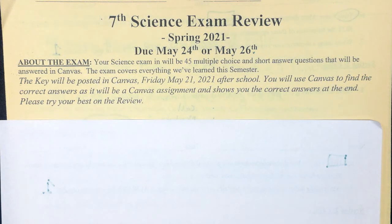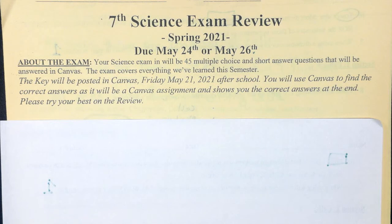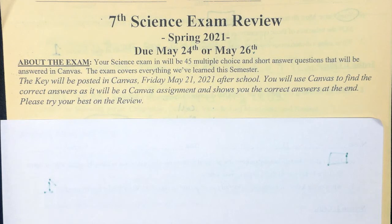7th grade science exam review, spring 2021. Your review will be due on May 24th or May 26th, depending on which day you have your final exam. This key will be posted in Canvas on Friday, May 21st.